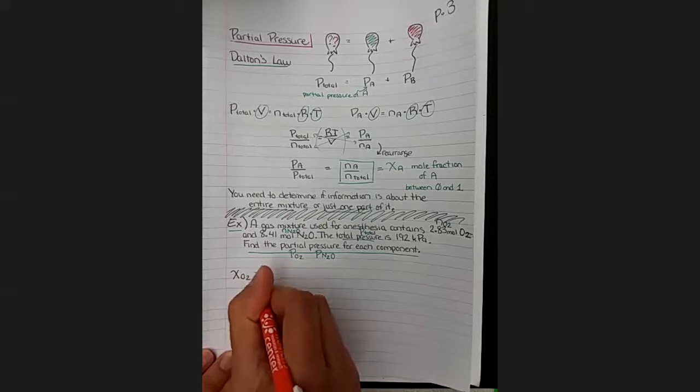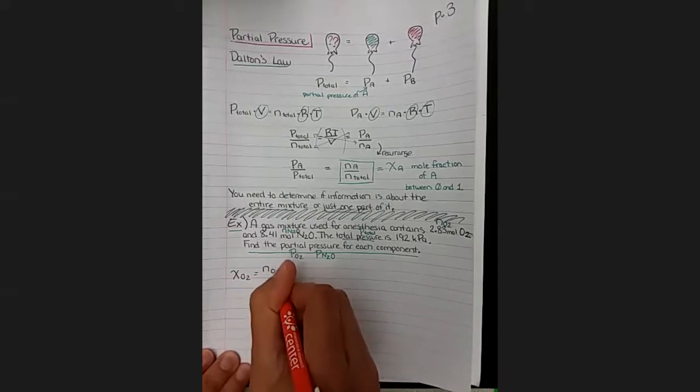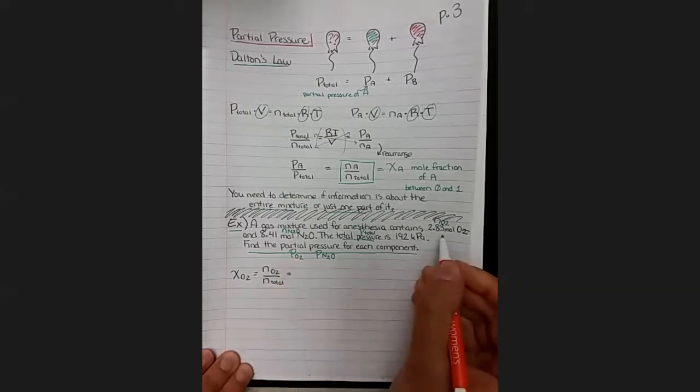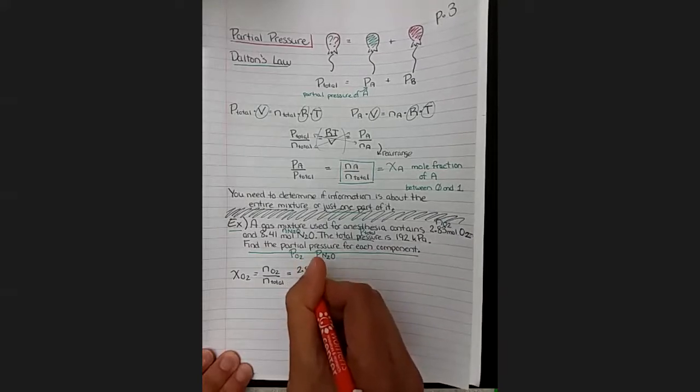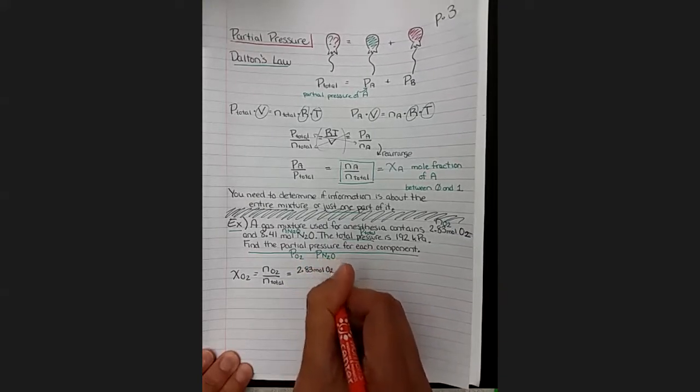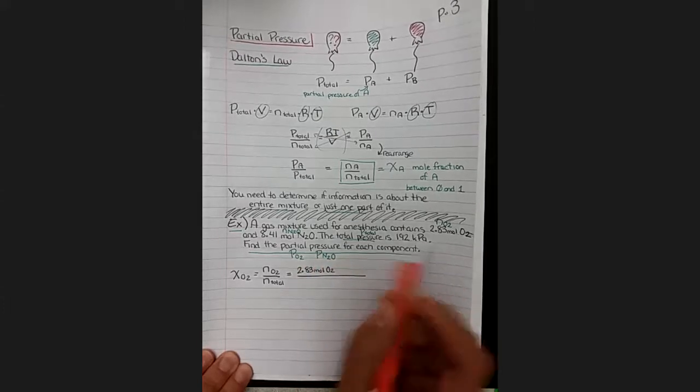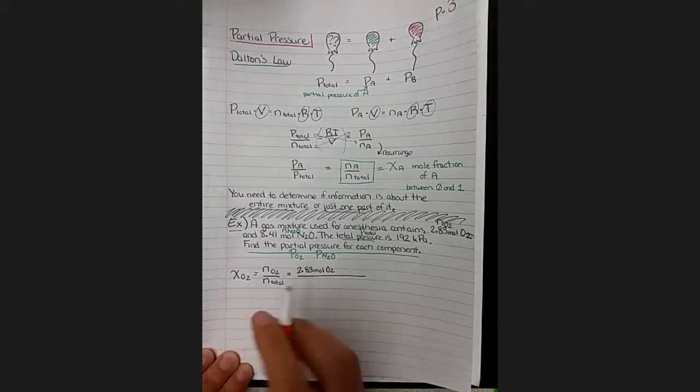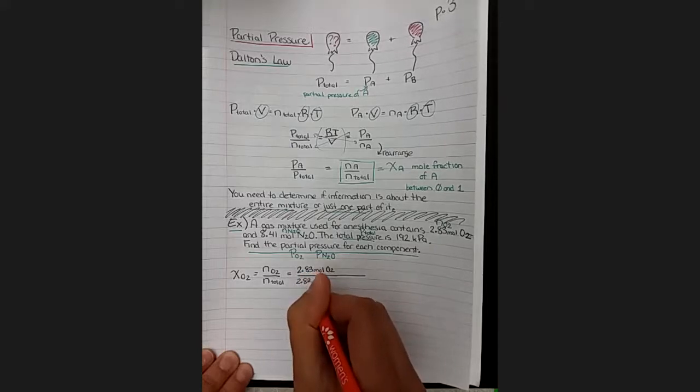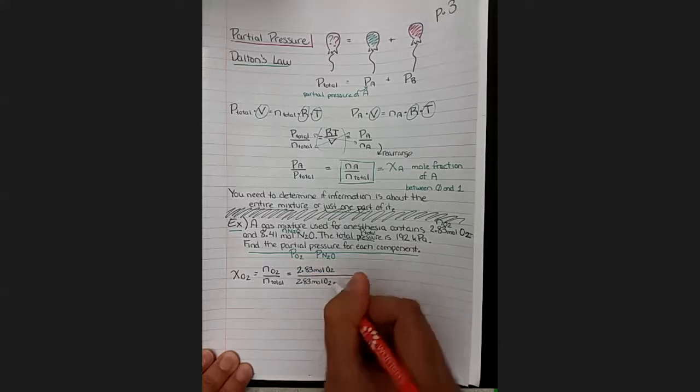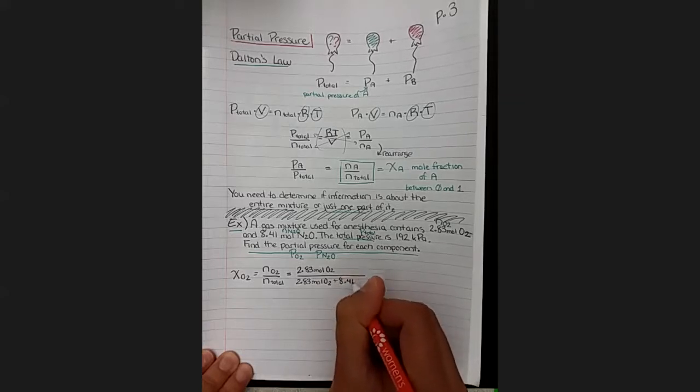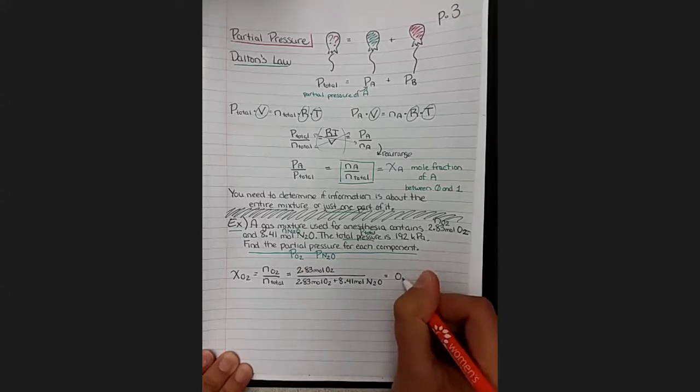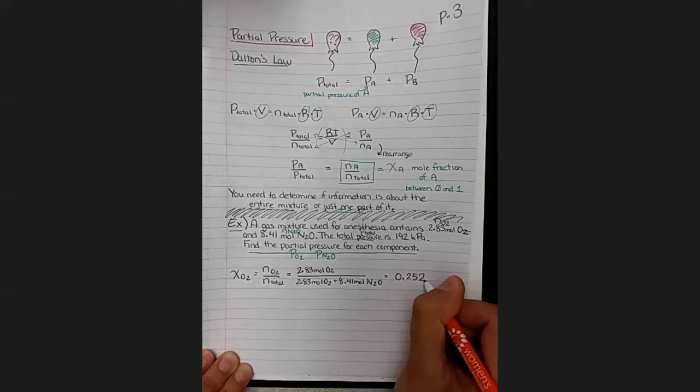The mole fraction for oxygen is going to be the number of moles of just oxygen over the total moles. So we have moles of oxygen here, 2.83 moles. And we can get the total moles by adding the moles of oxygen and N2O together. So the denominator 2.83 moles of oxygen plus 8.41 moles of N2O. Plug those in and we should get a number between 0 and 1, 0.252.